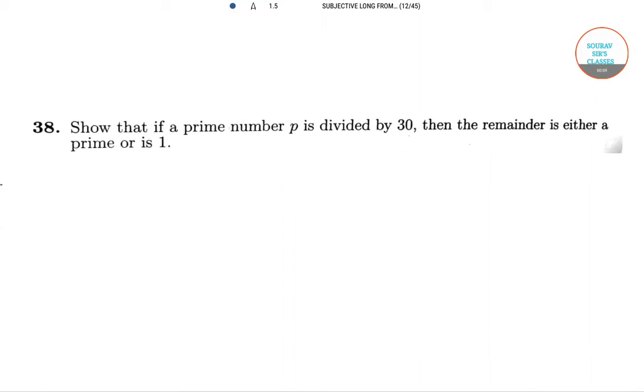In this question, we have to show that a prime number P, which is divided by 30, then the remainder is either a prime or it is 1.